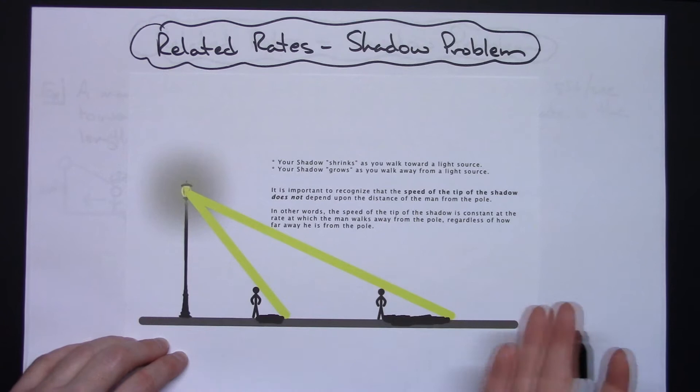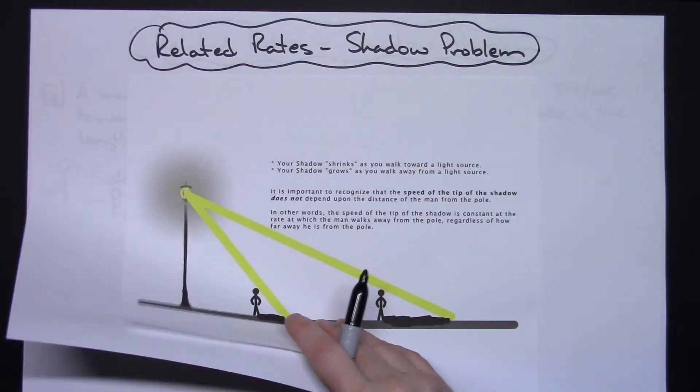For some reason that seems to create some problems for some students. Especially if they give the distance in that particular type of question, people think they have to use it. You don't have to use that number. In other words, the speed of the tip of the shadow is constant—the rate of the tip of the shadow is the rate at which the man walks away from the pole regardless of how far he is from the pole.